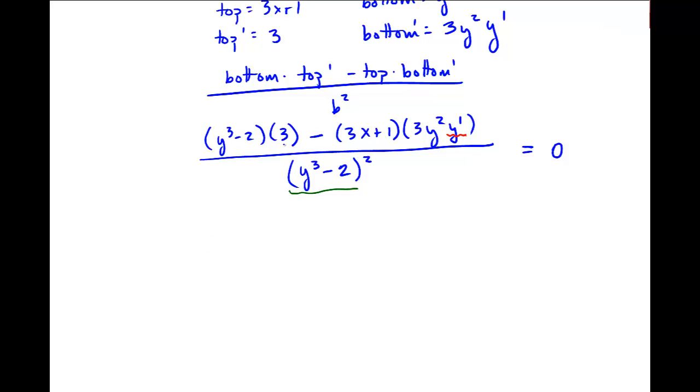And let me go ahead and multiply these out as well. So I get, for the numerator, 3y cubed minus 6 minus, and I'll leave this in parentheses to make sure the minus comes okay. So 9xy squared y prime plus 3y squared y prime. Just like that.